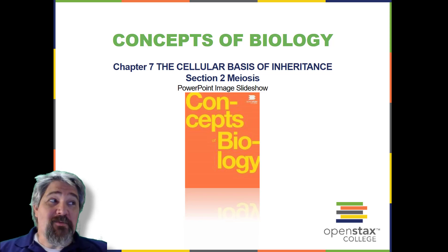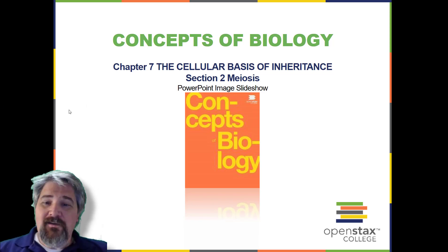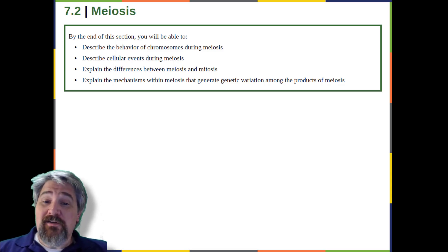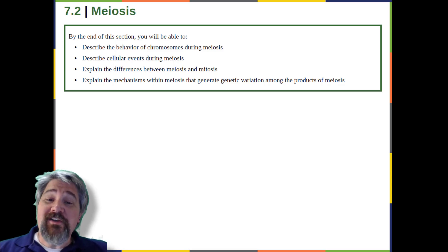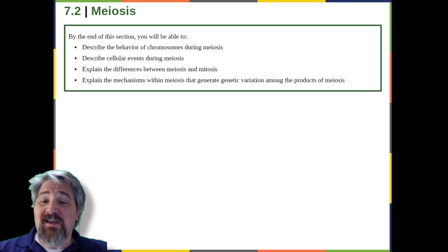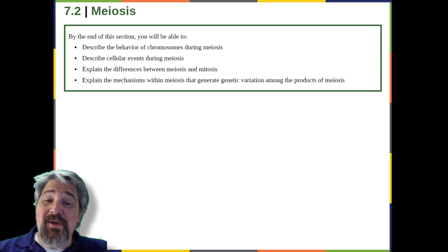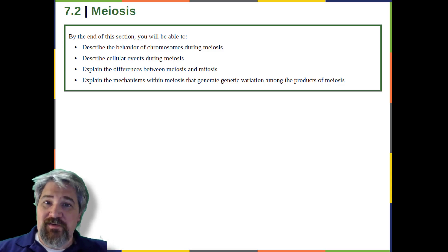Welcome back to Chapter 7, Section 2: Meiosis. By the end of this section, you will be able to describe the behavior of chromosomes during meiosis, describe cellular events during meiosis, explain the difference between meiosis and mitosis, and explain the mechanisms within meiosis that generate genetic variation among the products of meiosis.